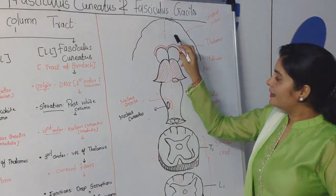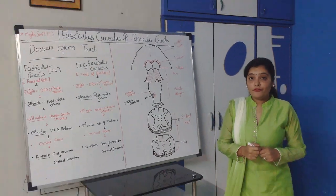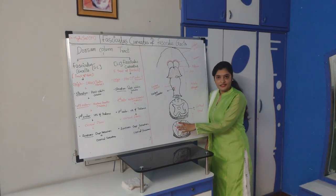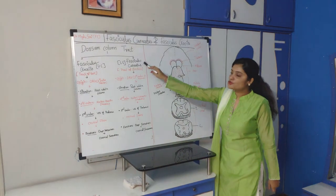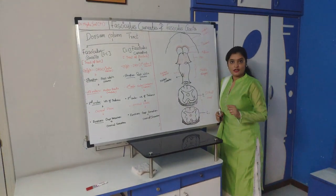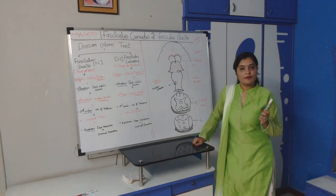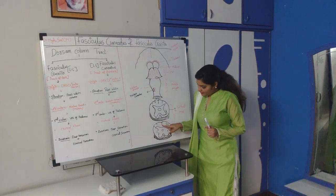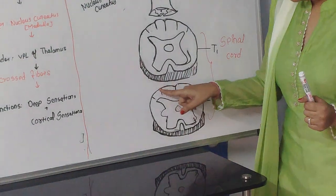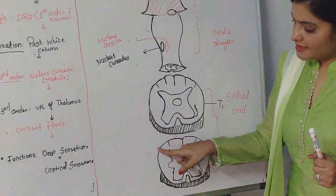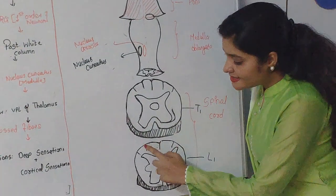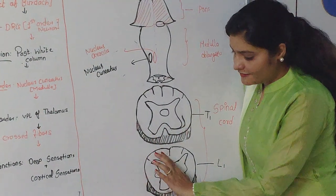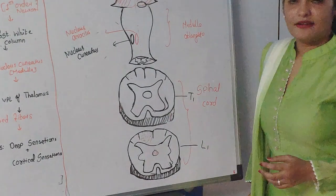This is the pons, this is the midbrain, this is the thalamus, and this is the cerebral cortex. Before going to the course of this tract, I would like to revise the posterior part of the spinal cord. In the posterior part, the posterior median septum is situated. Because of this sulcus and septum — the posterior intermedial sulcus and the posterior lateral sulcus — the posterior white column is divided into two parts: a medial part and a lateral part.